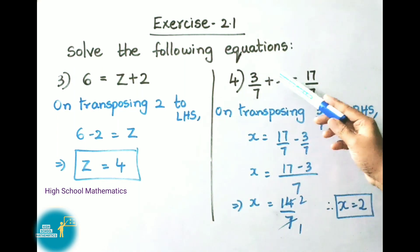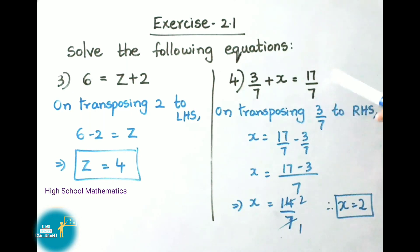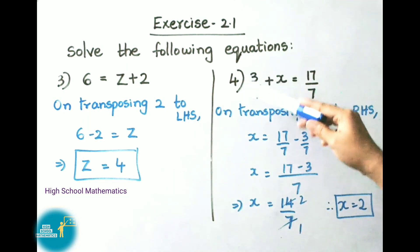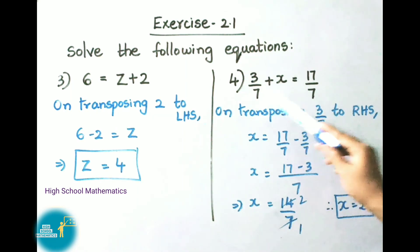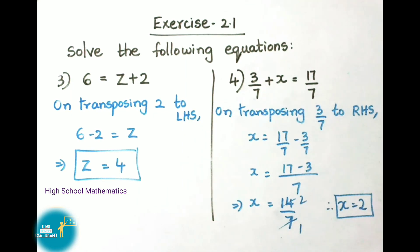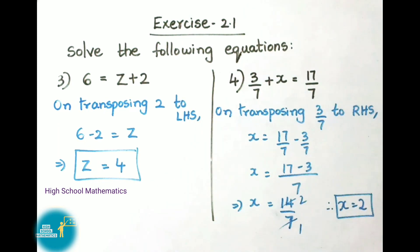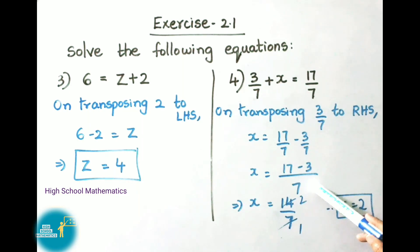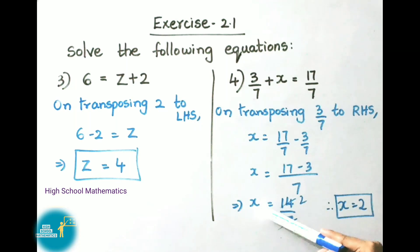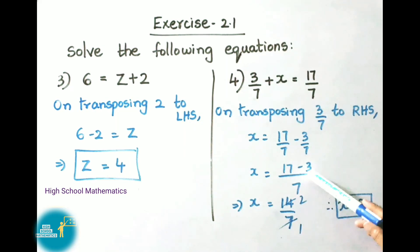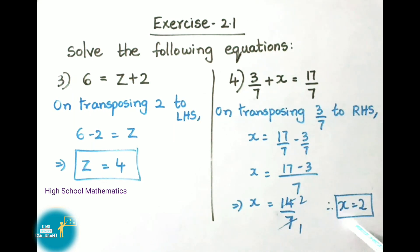See now the fourth sum: 3 by 7 plus x equals to 17 by 7. To remove 3 by 7 we are going to transpose it to RHS. So x equals to 17 by 7 minus 3 by 7. Since the denominators are equal, we take the numerator: 17 minus 3 equals 14 by 7. Since 7 twos are 14, therefore x equals to 2.